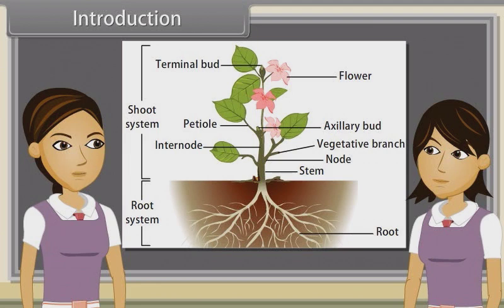When we observe a plant, we see that every plant has roots, stem and leaves. Plants also have flowers and fruits.